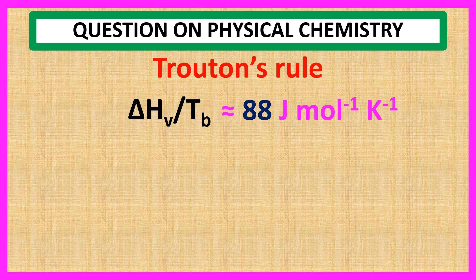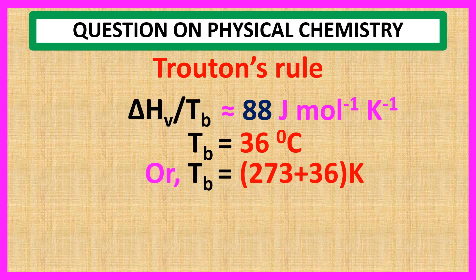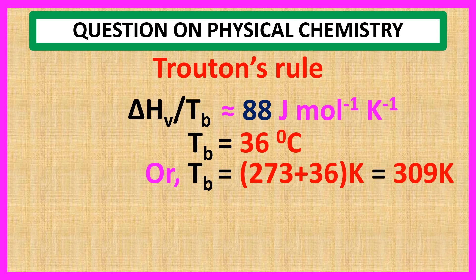Here, the given boiling point is Tb = 36 degrees centigrade, or Tb = 273 + 36 K = 309 K.